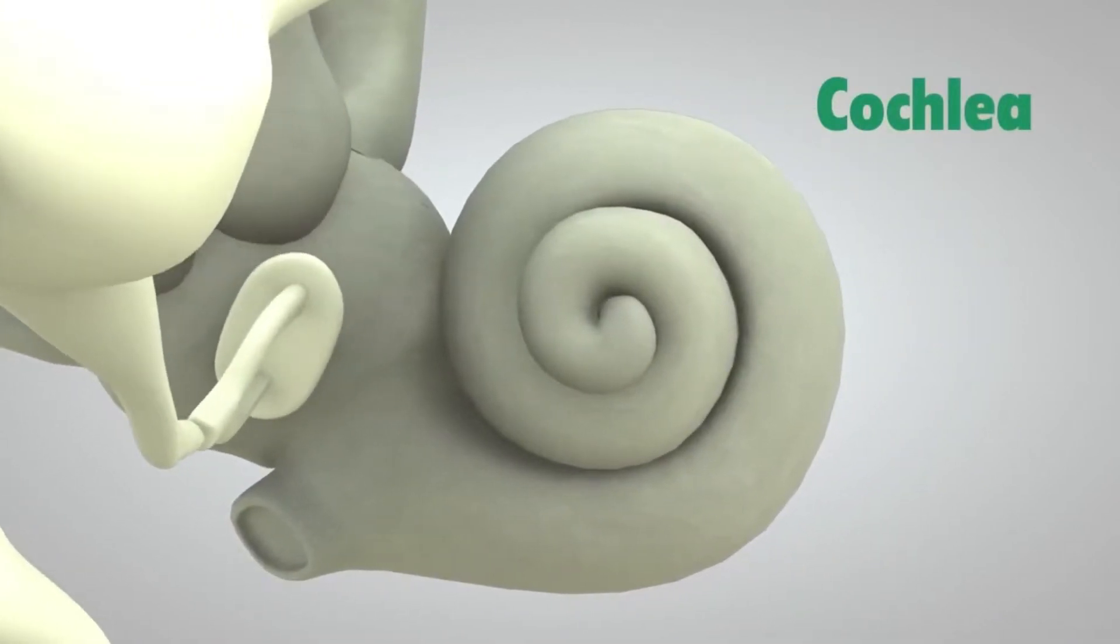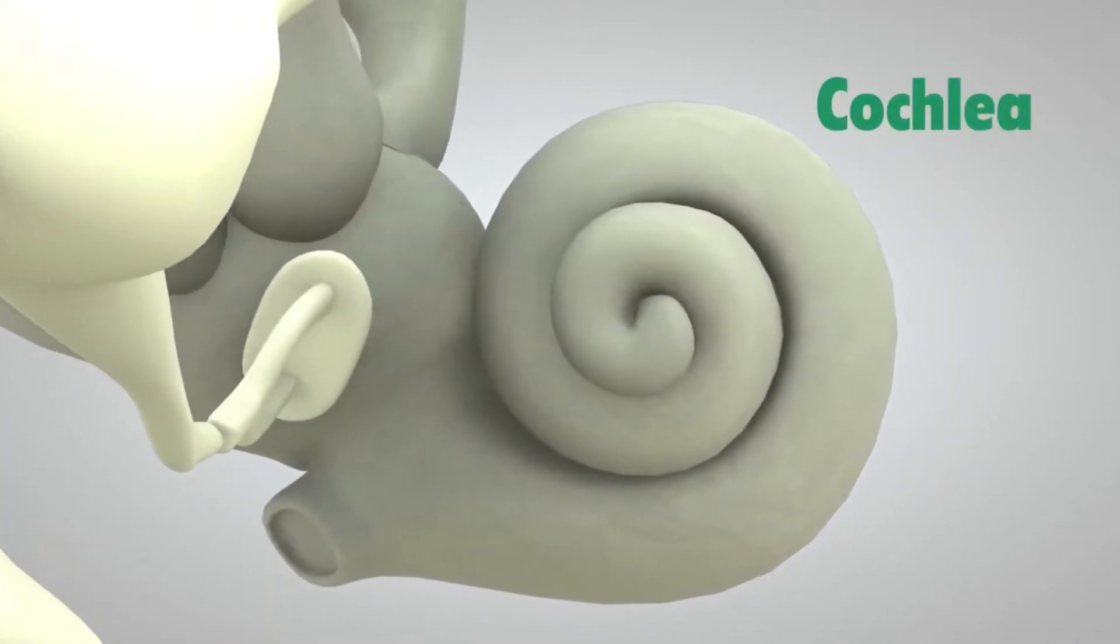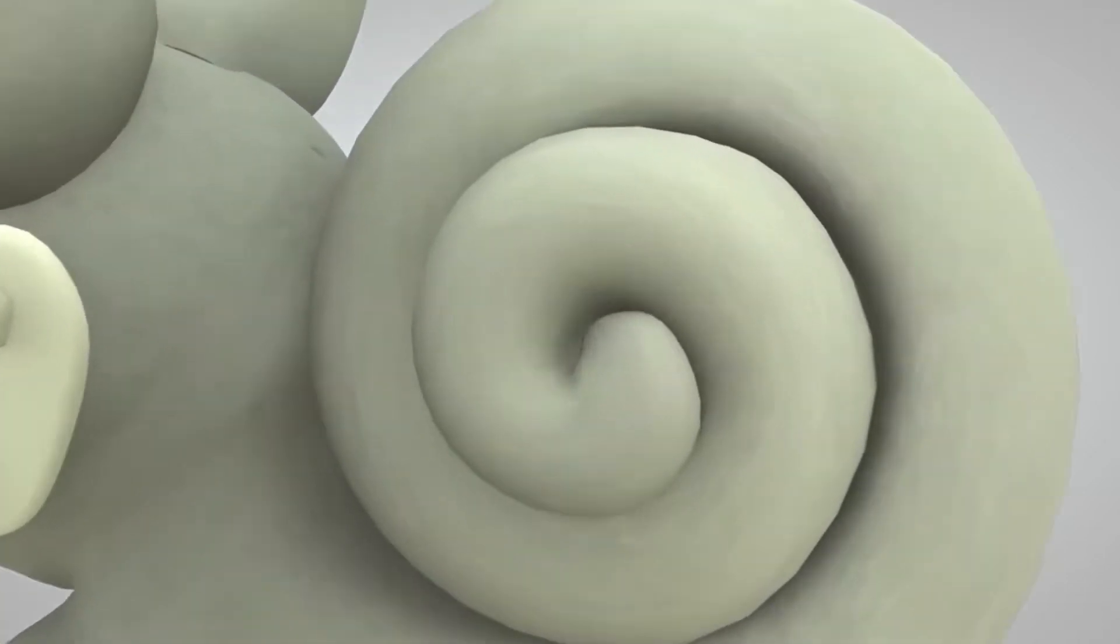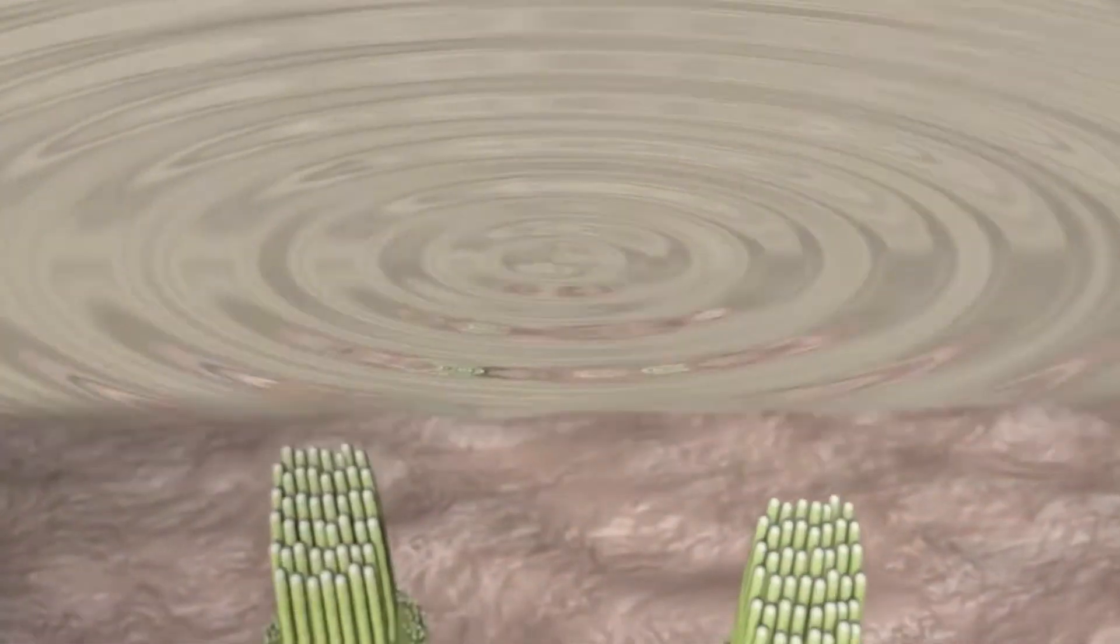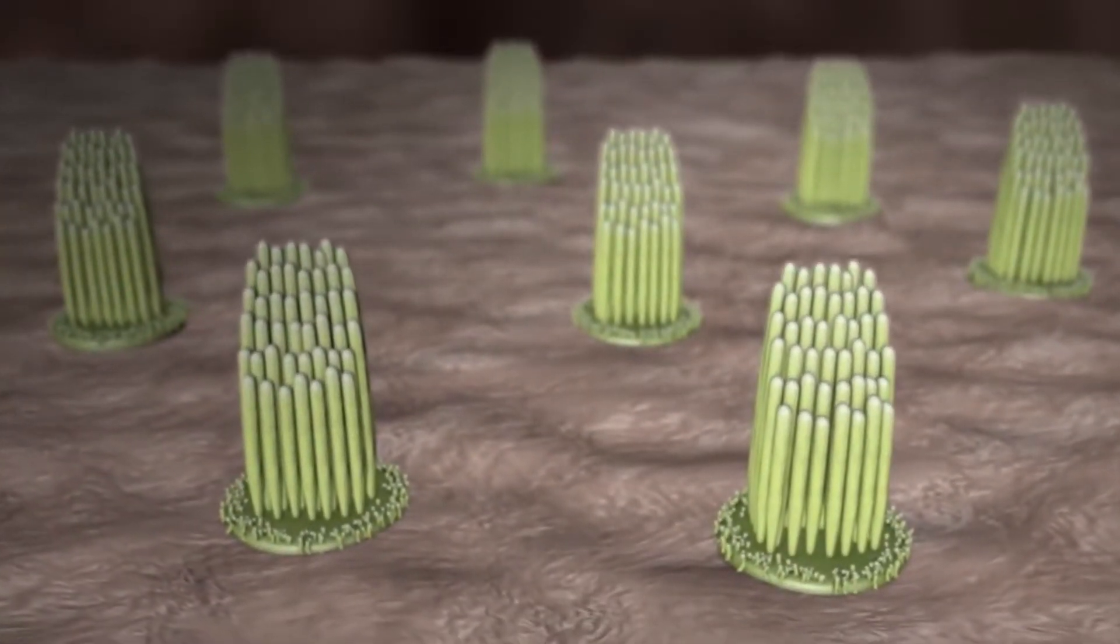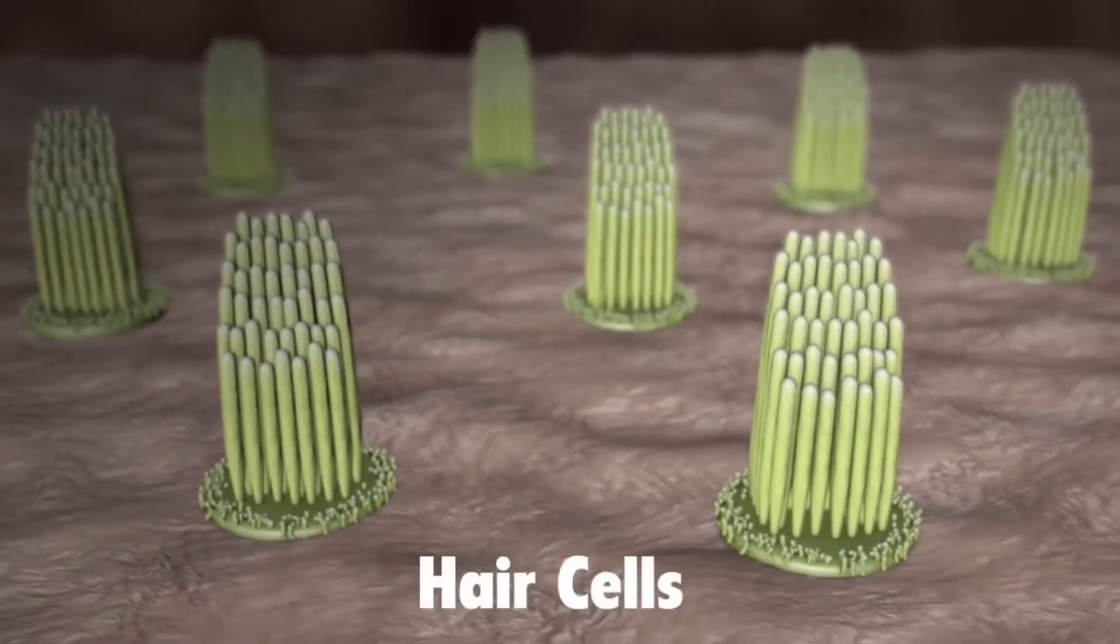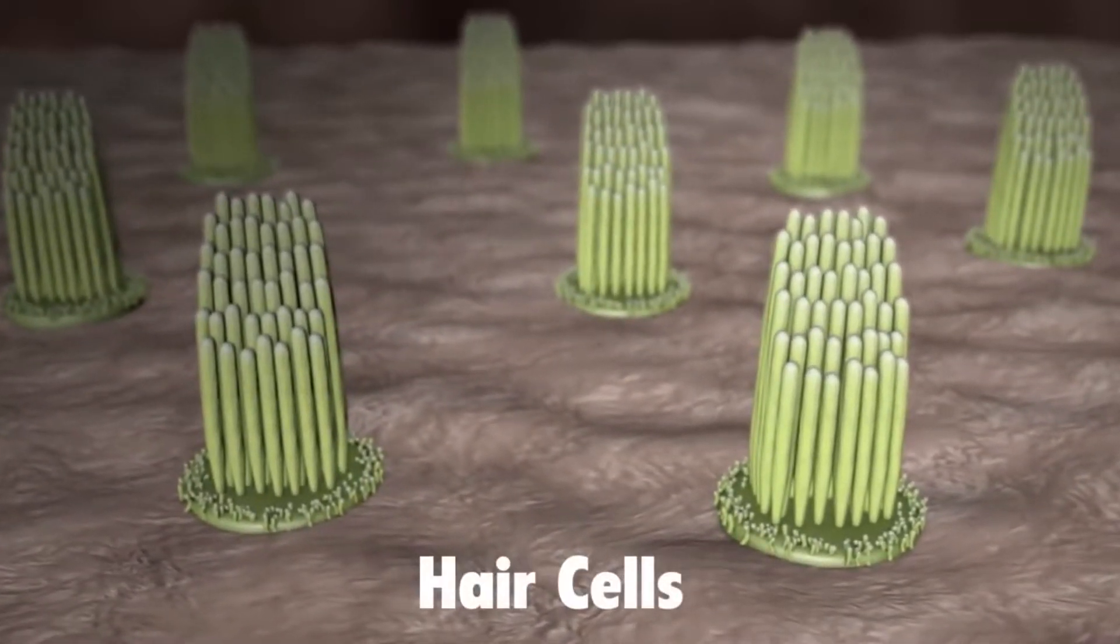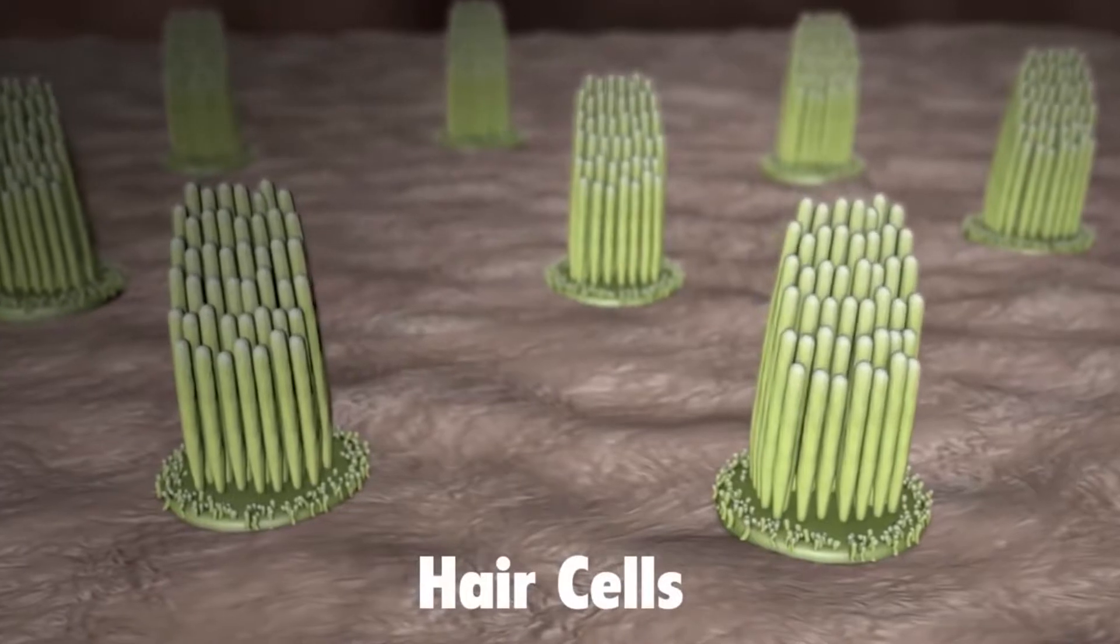The cochlea is shaped like a snail and is the size of a garden pea. It is filled with fluid, and the sound vibrations make this fluid ripple, which creates waves. Hair-like structures called stereocilia sit on top of hair cells and are grouped together as hair cell bundles inside the cochlea.